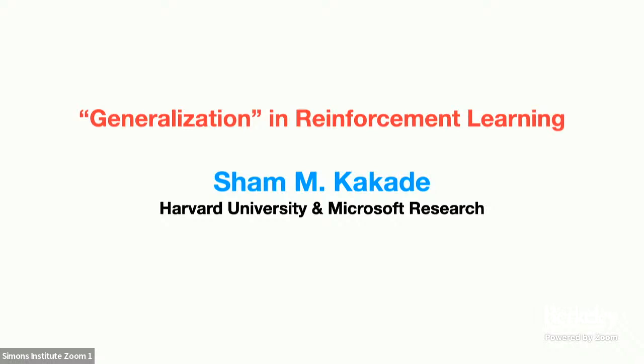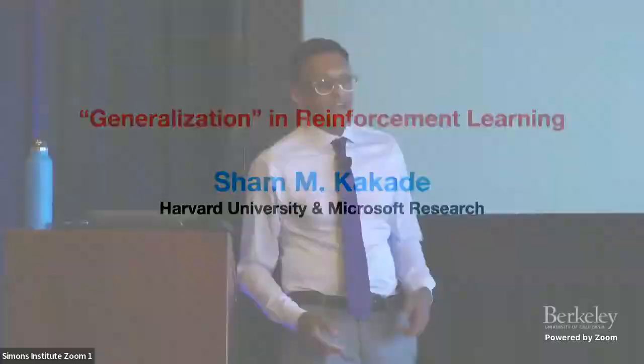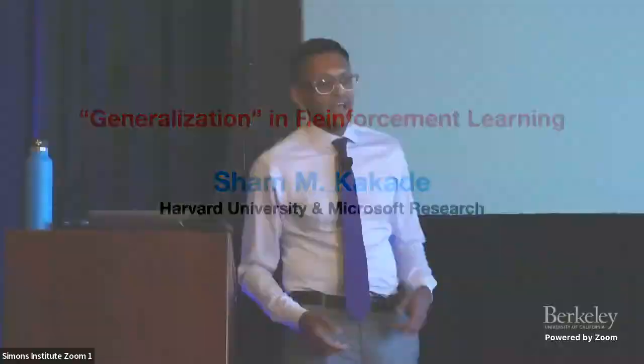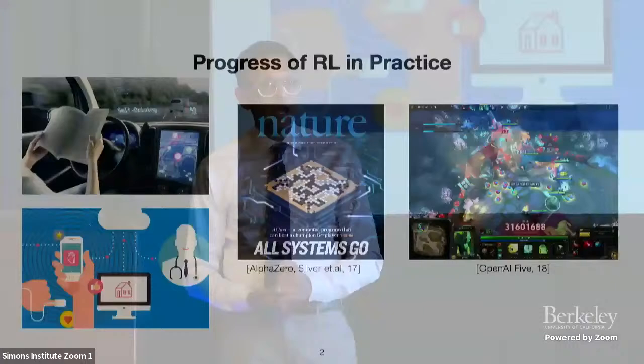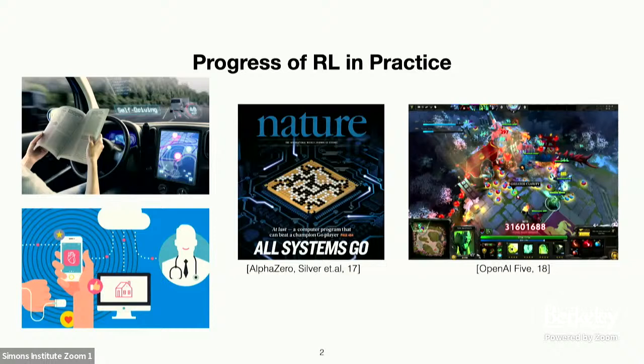I'm very happy to have Shyam here today to tell us about results in the complexity of reinforcement learning. Thanks, Peter. And definitely a huge thanks to the Simons Institute for convening everyone together. This talk is going to switch gears from looking at natural intelligence to the artificial basis of intelligence. In particular, we're going to look at this reinforcement learning problem where we have an agent which wants to maximize some long-term performance measure in a possibly uncertain world.